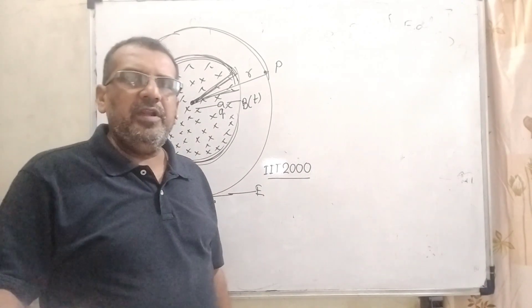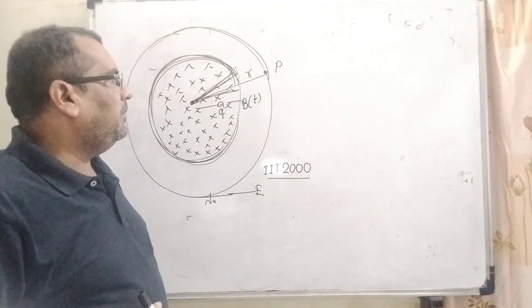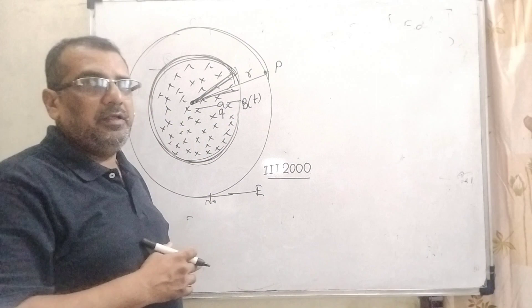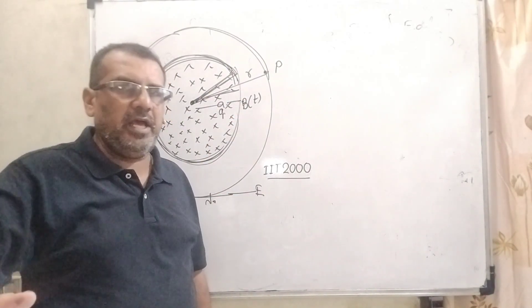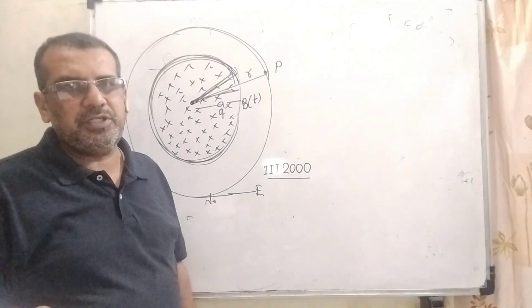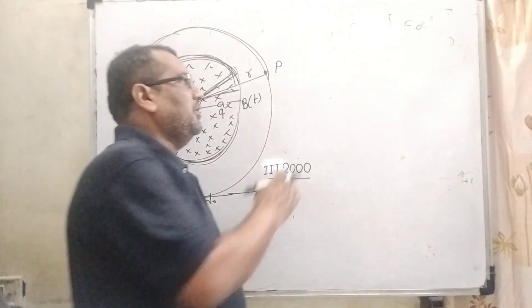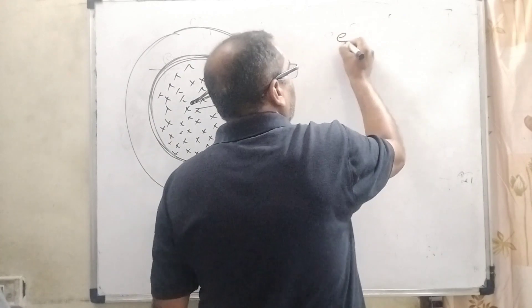In this question, a very interesting thing is given: uniform but time-varying magnetic field. What does it mean? Whenever we change the time, the magnetic field also changes. And what is the relation between induced EMF and electric field?